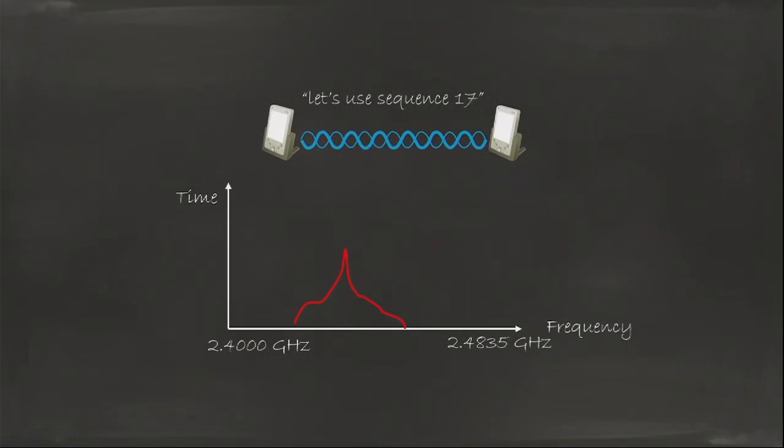And 17 means that you're going to start this frequency for a certain amount of time, and then you're going to jump to that frequency for a certain amount of time, and then you're going to jump here, and then there, and then there, and you get the picture. So sequence 17 does not necessarily understand that there is this source of interference in between. What it does is that it decides of a certain number of jumps from one frequency to the other in a certain sequence.